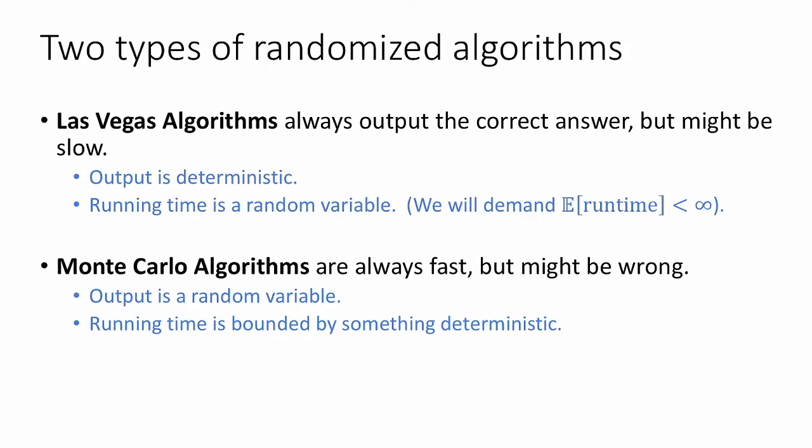In these videos we're going to consider two types of algorithms, Las Vegas algorithms and Monte Carlo algorithms. So Las Vegas algorithms always output the correct answer, but they might be slow. So in this case the output is deterministic, it's always the right answer, but the running time is a random variable, and typically we're going to demand that the expectation of the running time is finite. An example of a Las Vegas algorithm that you might have seen before is quicksort. So quicksort is always correct, it always outputs a sorted list, and usually it's fast, but in some very bad cases if it gets unlucky it might be slow.